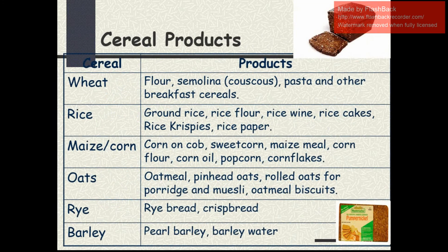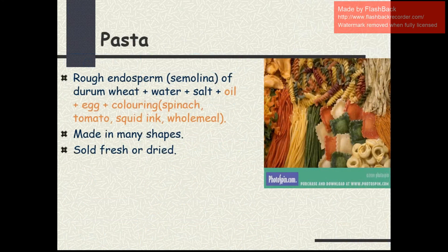These are the various cereal products available in the market. Wheat products include flour, semolina, pasta and other breakfast cereals. Rice-related products are ground rice, rice flour, broken rice, rice wine, rice cakes, rice crispies and rice paper. Maize-related products are corn on the cob, sweet corn, maize meal, corn flour, corn oil, popcorn and corn flakes. Oat products include oatmeal, pinhead oats, rolled oats for porridge and muesli, oatmeal biscuits, dry bread and crispbread. Barley products are pearl barley and pearl barley water. Pasta is made from the rough endosperm of durum wheat with water, salt and oil mixed together and extruded into different shapes.